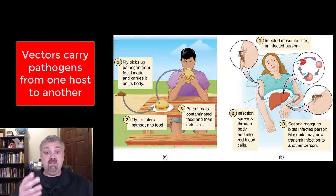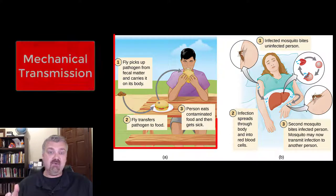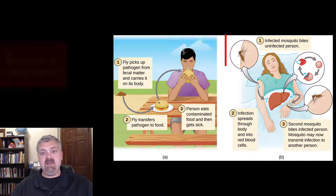Obviously where we see the pictures here are talking about flies and mosquitoes, but they can be larger animals. Imagine like a mammal carrying rabies. So there are two different ways that vectors can actually spread a disease from one host to another. We have mechanical transmission here on the left, and then we have biological transmission.